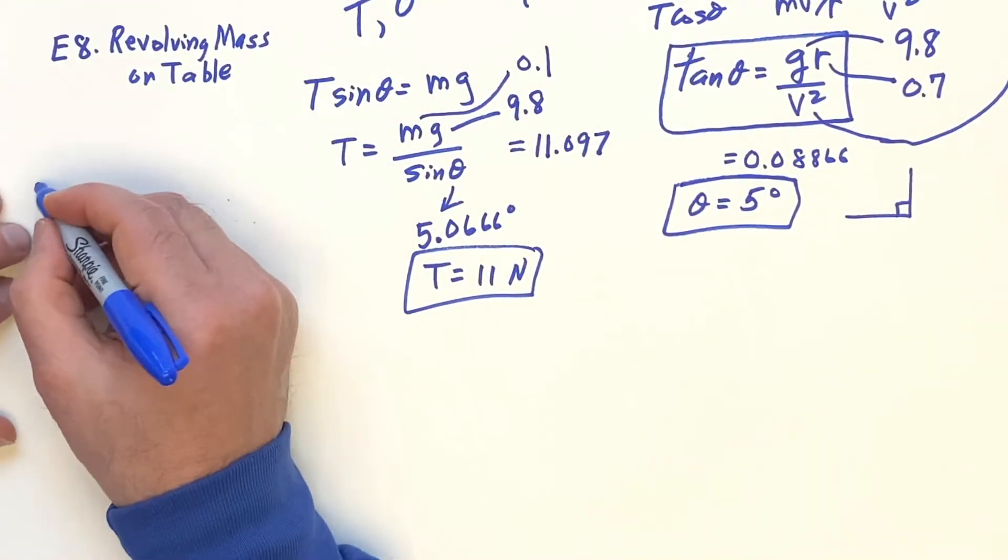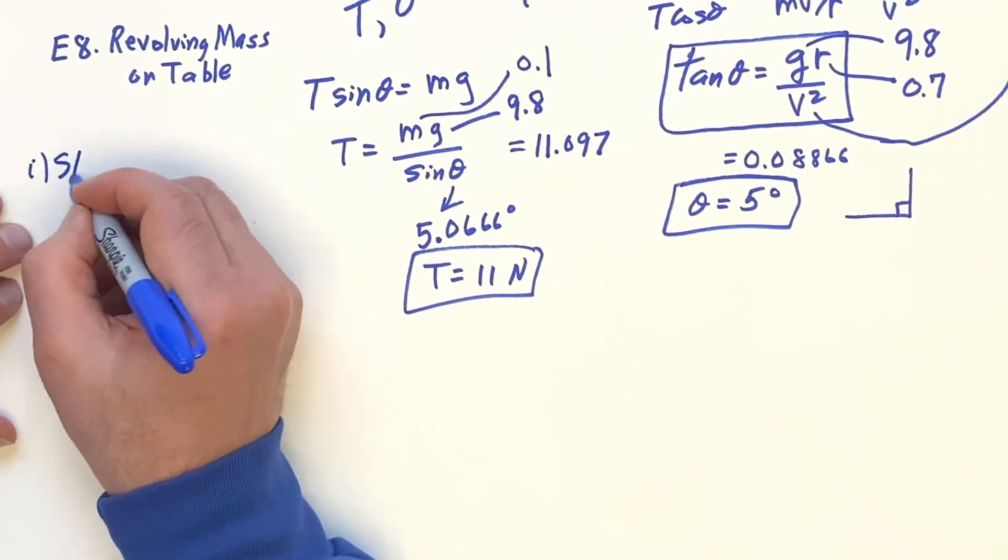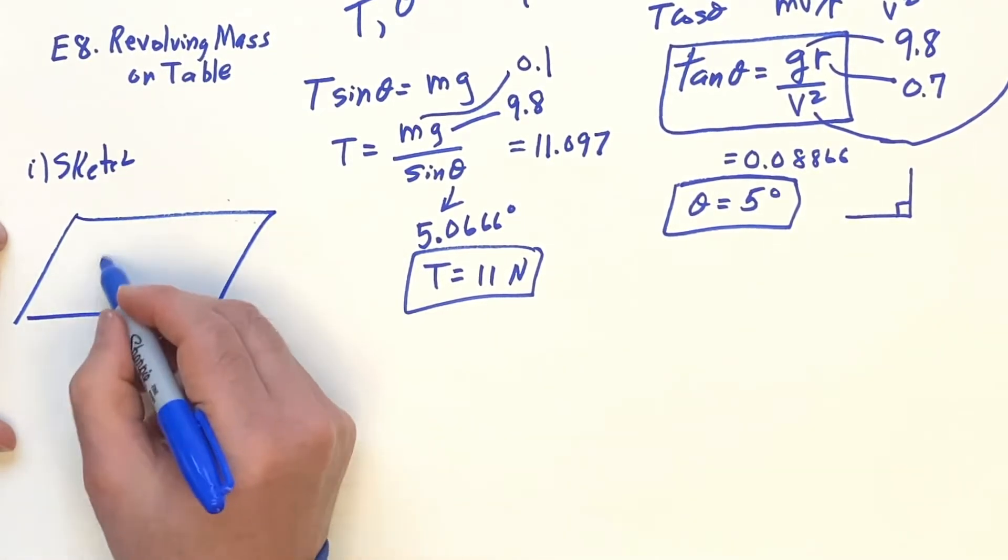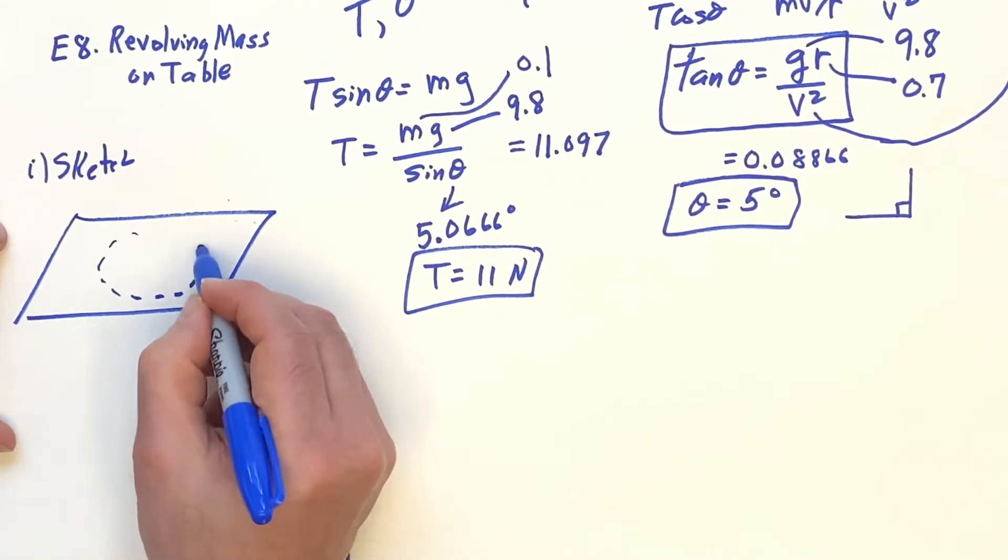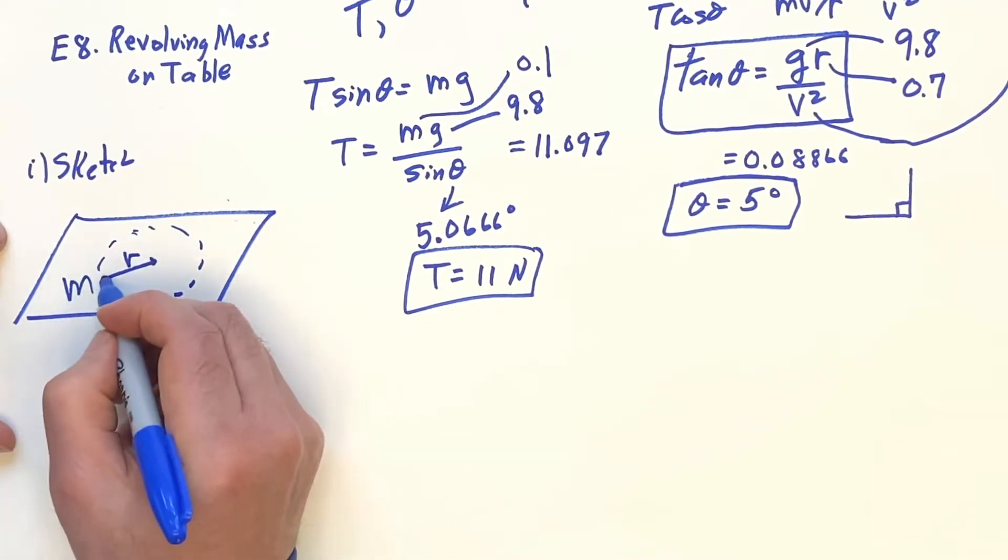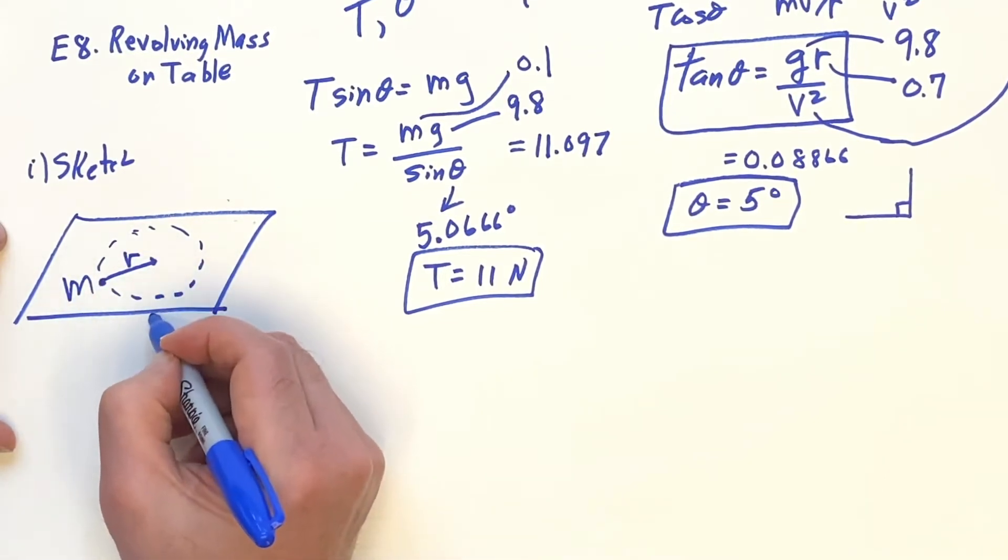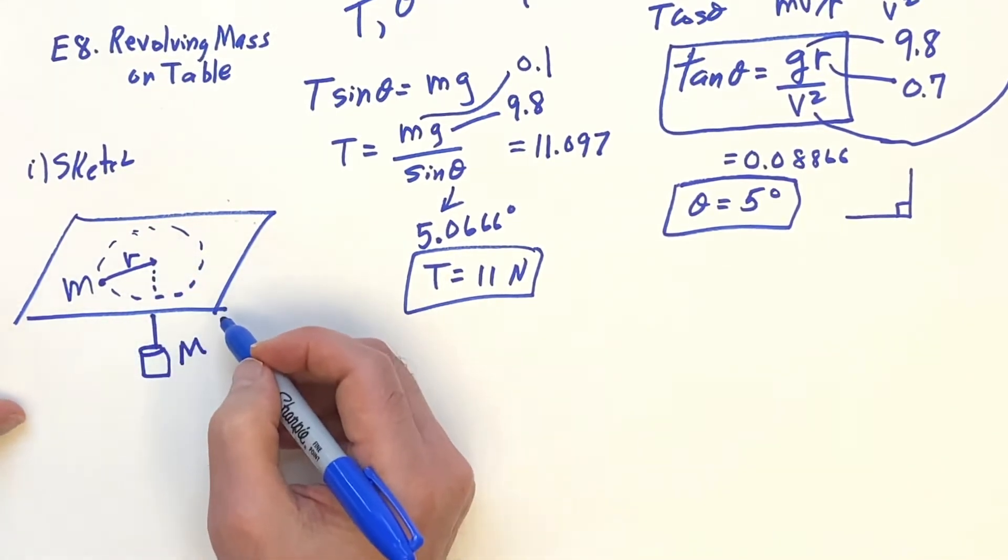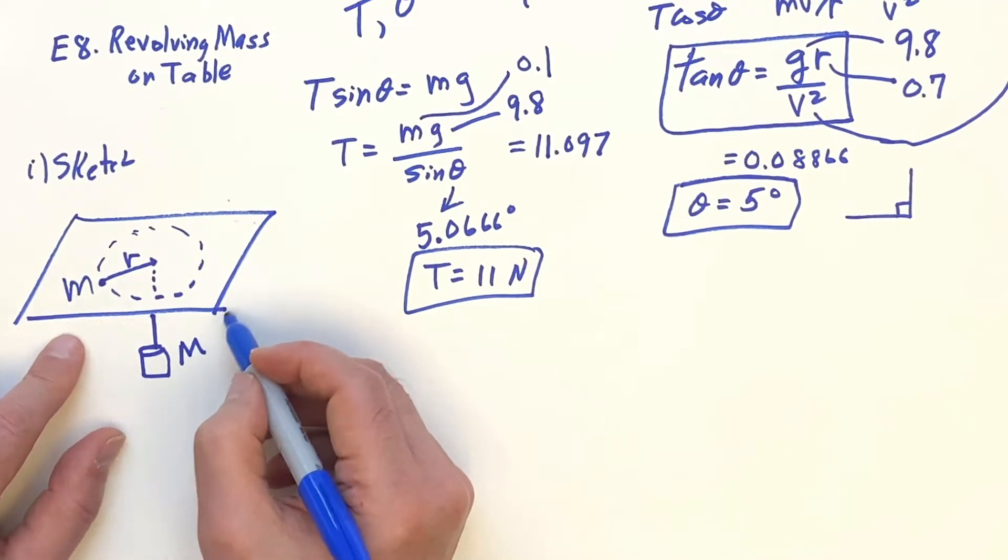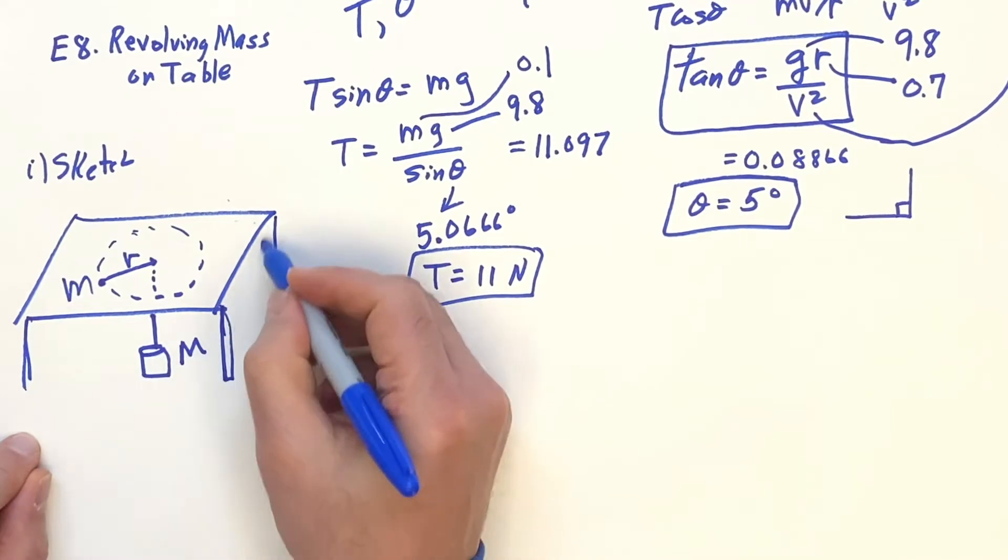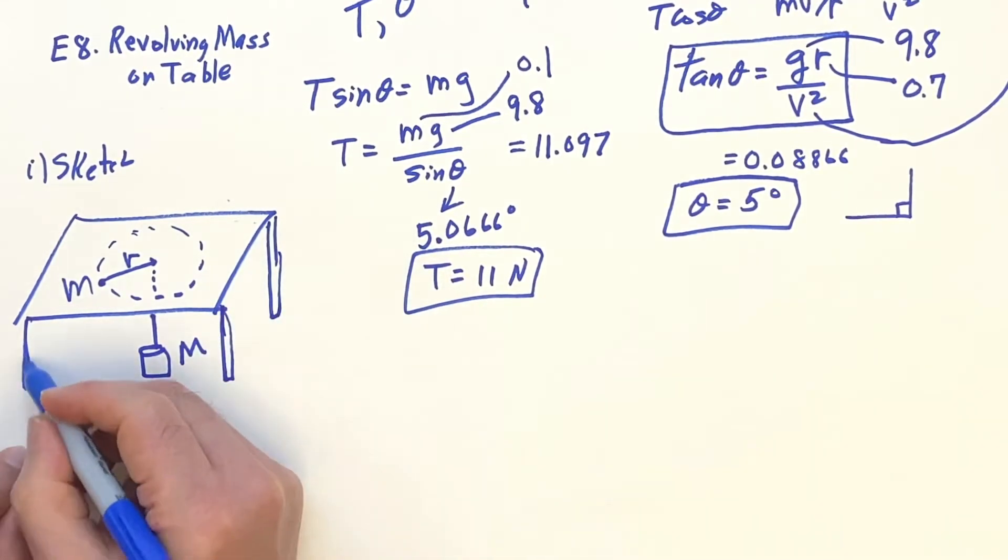And we will start here with a little sketch, like this. Radius r, little m, and down here you have the big M. So you have the parameters here. And this is the table here. If you want to go ahead and sketch in the table.